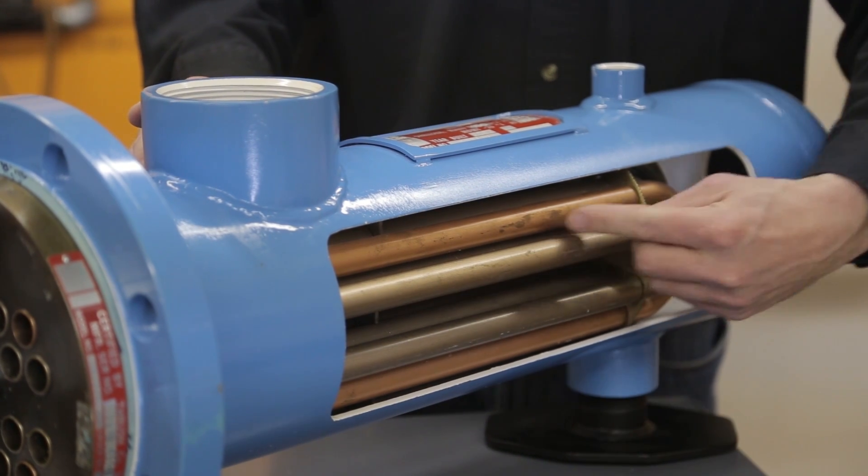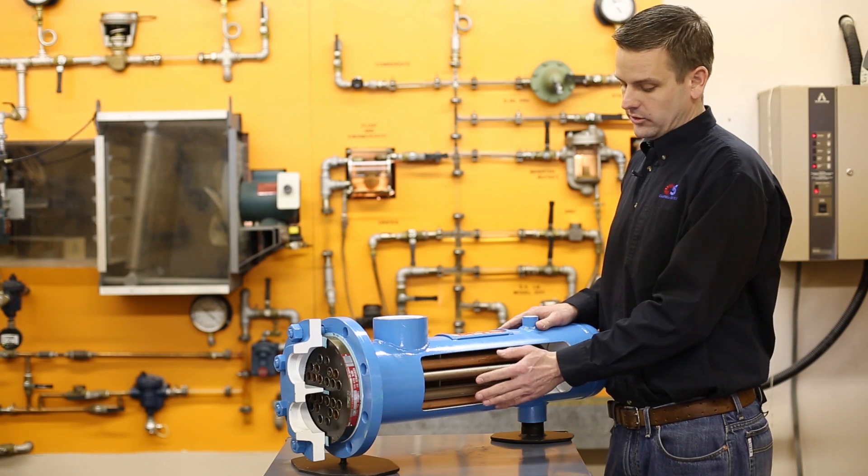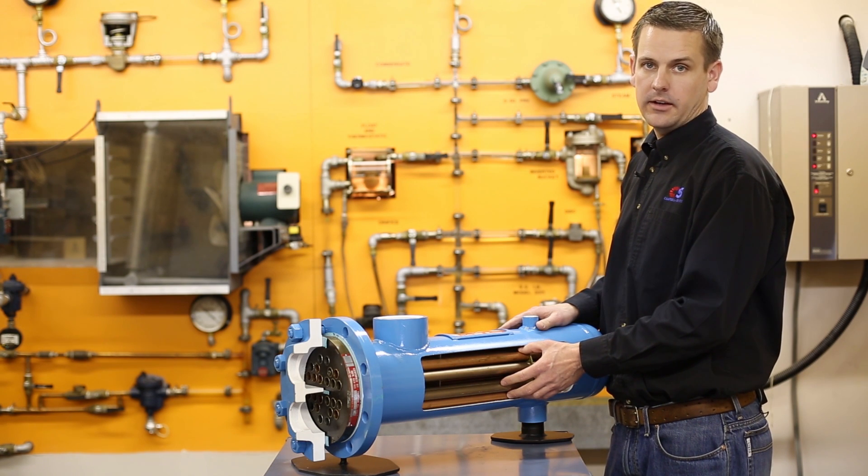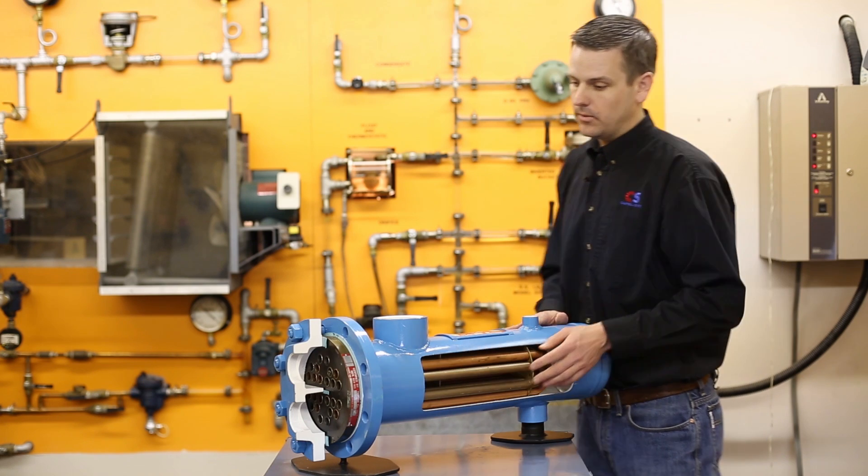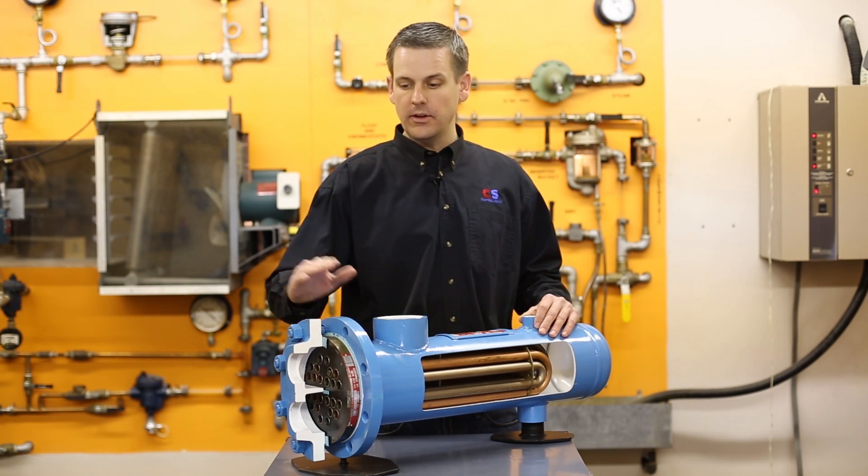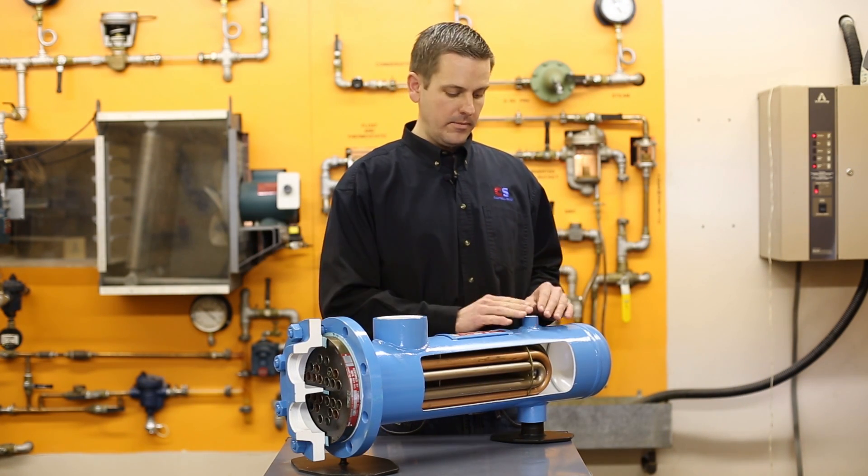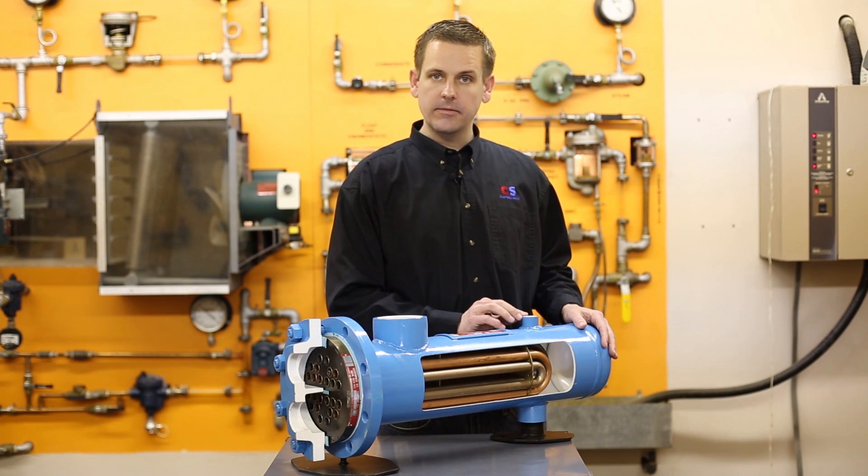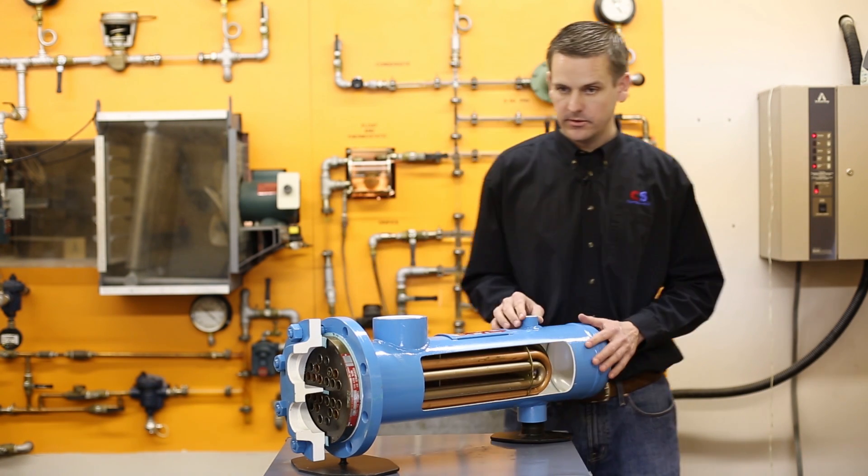Now when we do that, we have a unit full of air and non-condensibles. So when our steam control valve opens back up, we want to make sure we purge all that out with the air vent. Again, we put an air vent and a vacuum breaker off of this fitting.